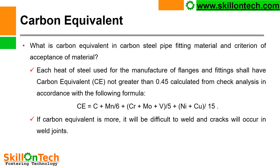Carbon Equivalent — what is the carbon equivalent in carbon steel pipe fitting material, and what are the criteria of acceptance? Each heat of steel used for the manufacture of flanges and fittings shall have carbon equivalent CE not greater than 0.45, calculated from check analysis in accordance with the following formula: CE = C + Mn/6 + (Cr + Mo + V)/5 + (Ni + Cu)/15.